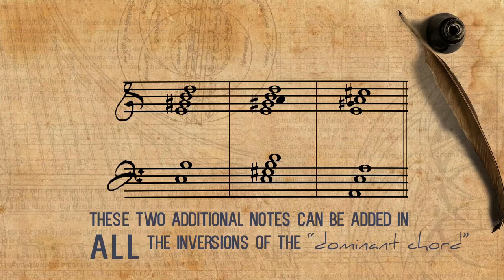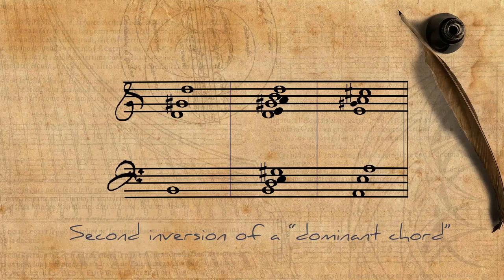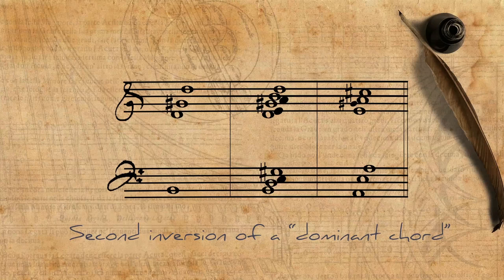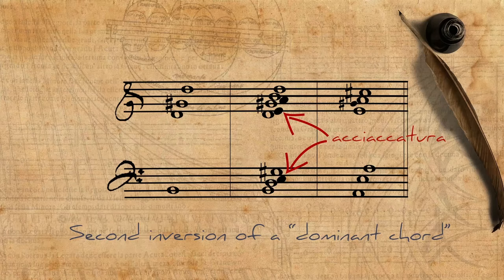These two additional notes can be added in all the inversions of the dominant chord. Here is the first inversion. In this case it's a bit confusing, because the basic note of the chord, the E, is now a dissonance to the bass and considered as an acciaccatura. But practically it has the exact same notes of the former chords.